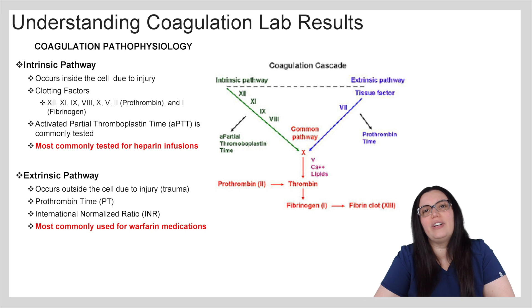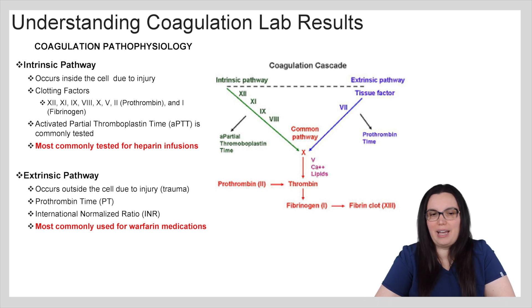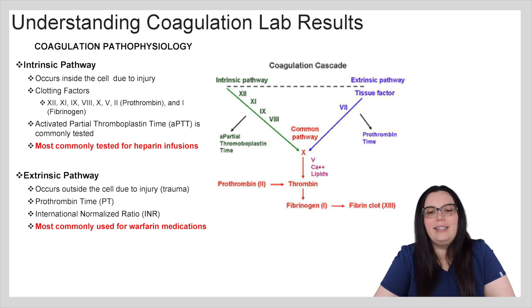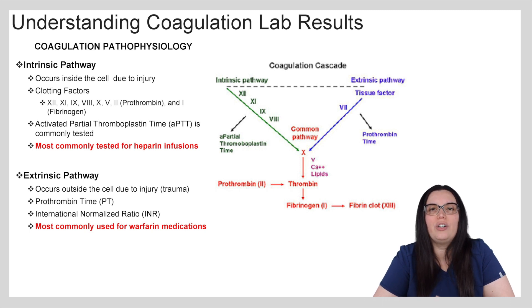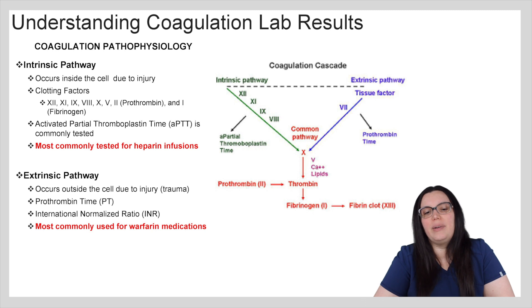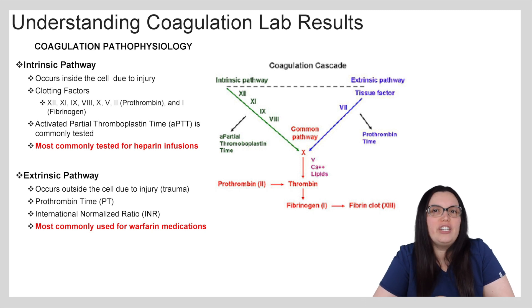When it comes to the extrinsic pathway, it occurs outside the cell due to injuries such as trauma. Here you're going to be looking at your prothrombin time as well as your INR, and that's most commonly used when evaluating the efficiency of warfarin therapies.